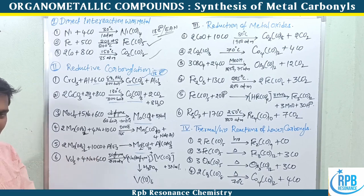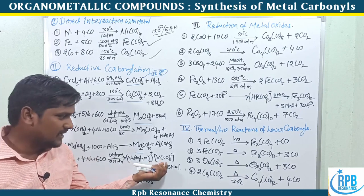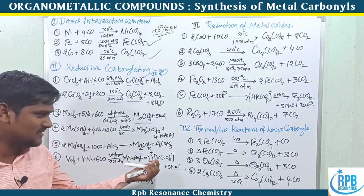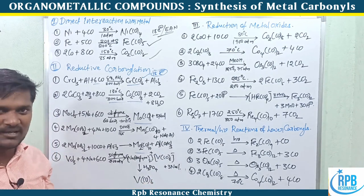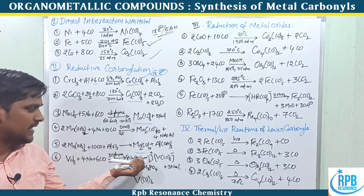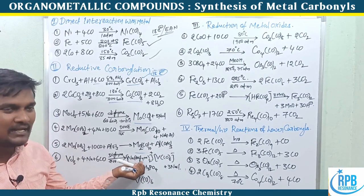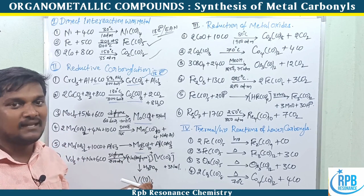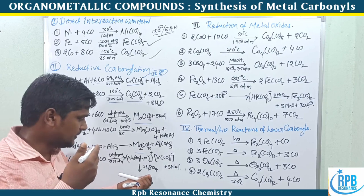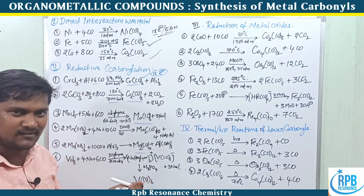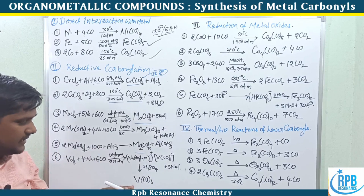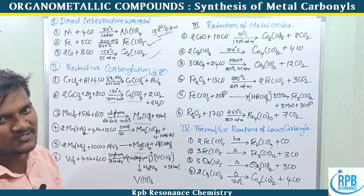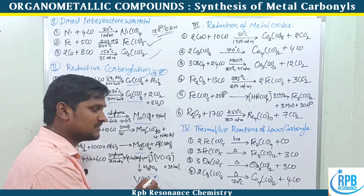An interesting final example: vanadium trichloride treated with sodium metal in the presence of carbon monoxide and diglyme produces the anionic complex [V(CO)6]⁻, as Na[V(CO)6]. This anion is used in IR spectra studies of metal carbonyls. Subsequent acid hydrolysis gives the neutral V(CO)6 — the exceptional mononuclear carbonyl from an odd-electron metal.